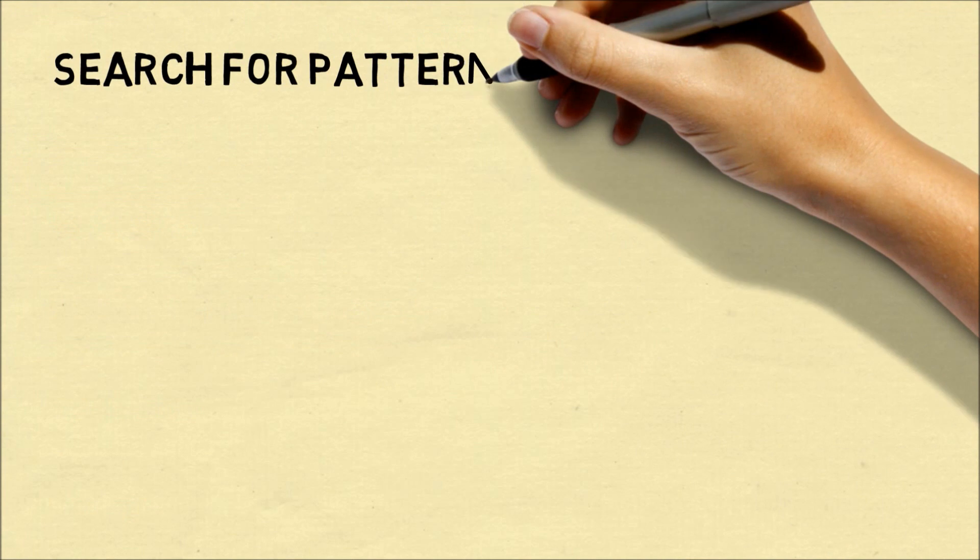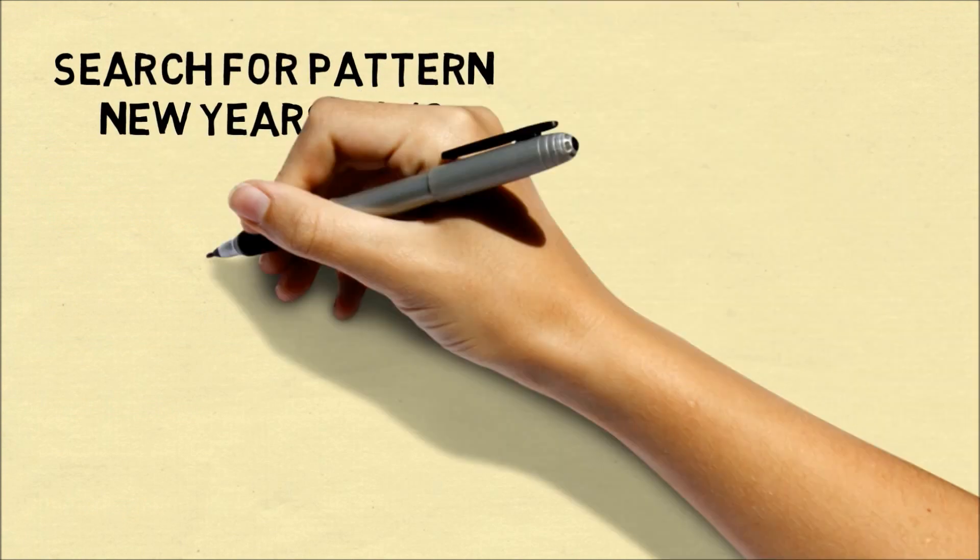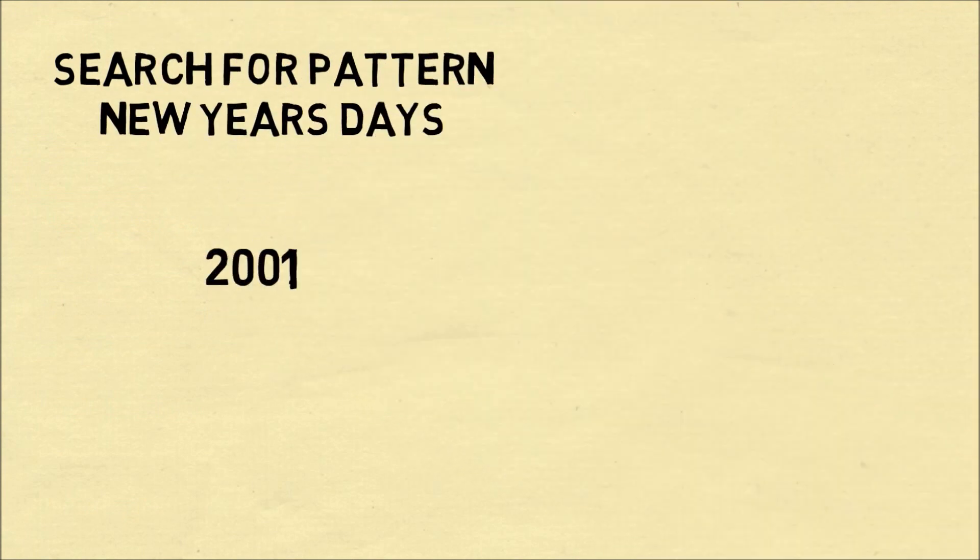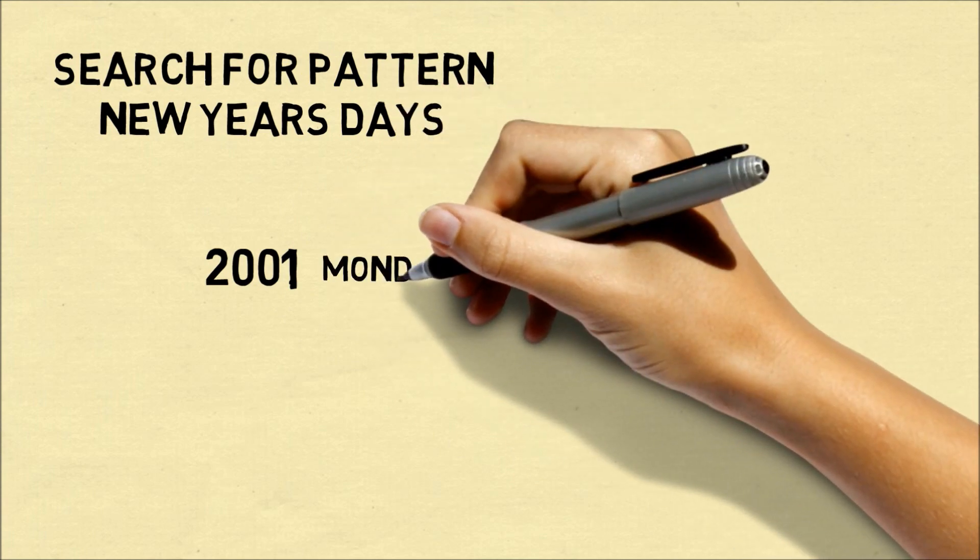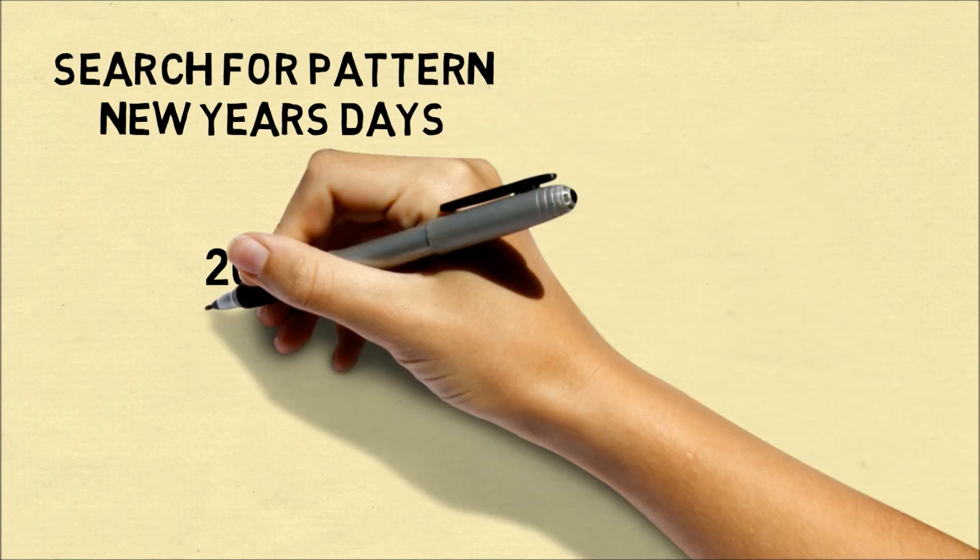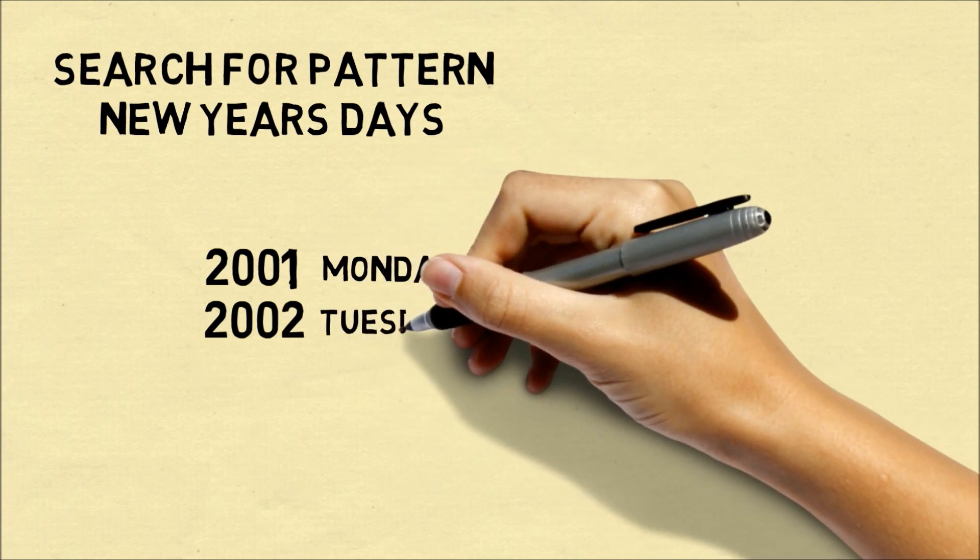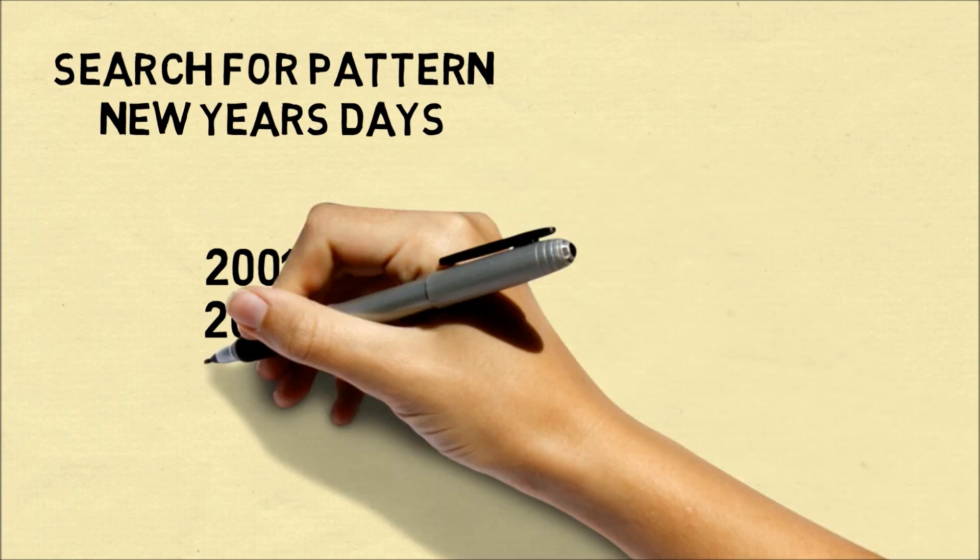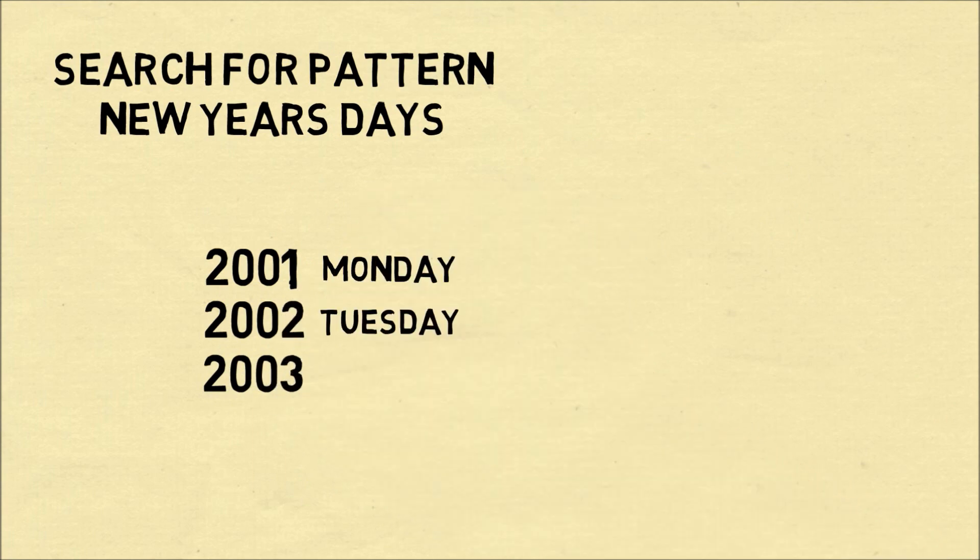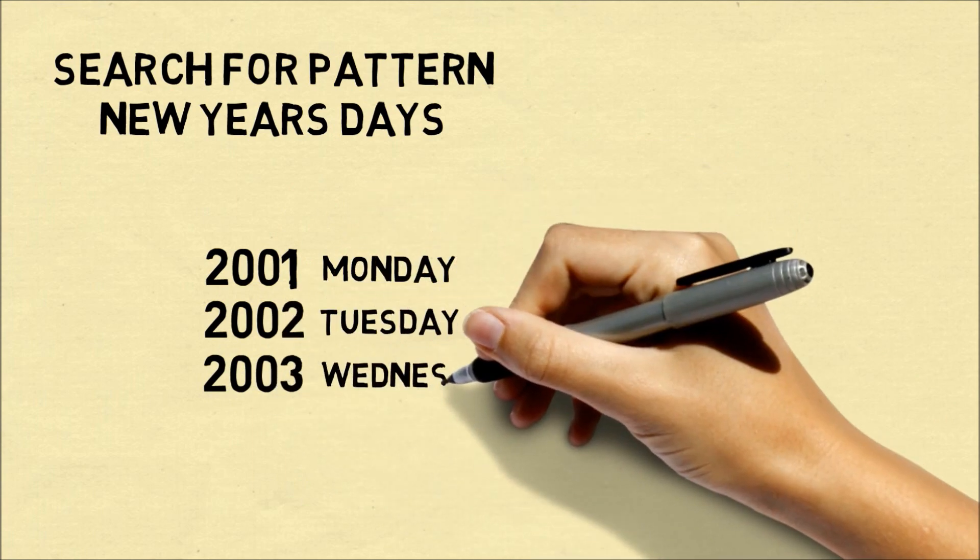But how can we do this in our head? Let's try and find a pattern in the day that the New Year starts. In 2001, the New Year started on a Monday. In 2002, it started on a Tuesday. In 2003, it started one day ahead, which is Wednesday.